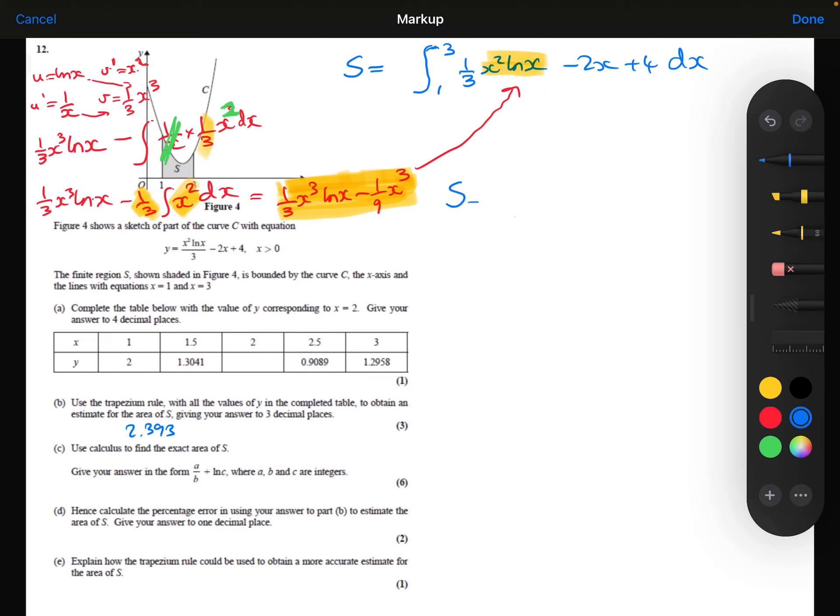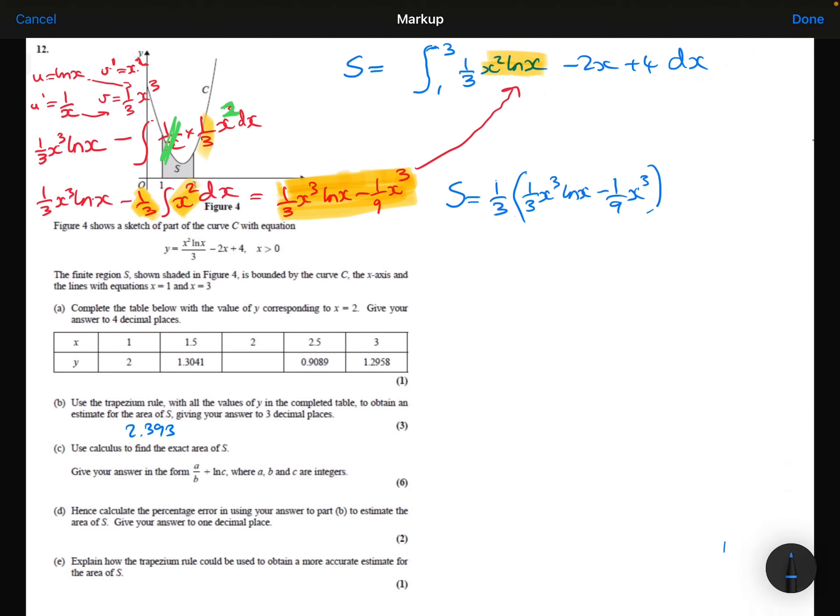Let me write down: S equals, we've got 1 third of the 1 third x cubed ln x minus 1 ninth x cubed. So I'm going to use curly brackets here. Integrating the minus 2x will just be minus x squared, and integrating the 4 will be 4x. And my limits are 3 and 1.